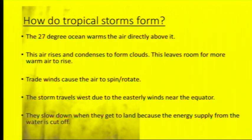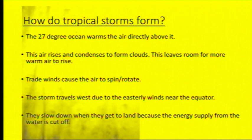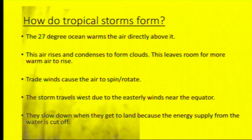Storms form when the water, at 27 degrees, warms the air directly above it. This air rises, and evaporation is going to condense to form clouds and they start to rain. Trade winds coming in from either side are going to start to make the storm spin and rotate, and when it picks up enough speed it's going to travel west because of the easterly winds near the equator.